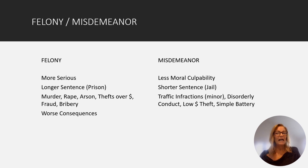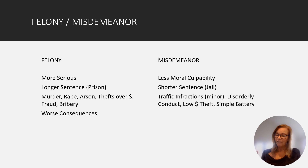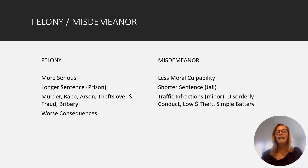The big difference between felonies and misdemeanors is not only in the punishment, but what the future ramifications can be. A felony has consequences: loss of professional license, you may not be able to vote, you can't sit on a jury, there may be some job restrictions. Apparently, you can run for president of the United States though — you may not be able to vote for yourself. But felonies have more severe consequences.